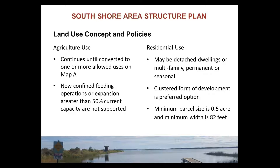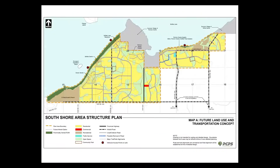Residential use could include anything from detached dwellings to small-scale multi-family, both permanent and seasonal. The preference for country residential subdivisions is a cluster form — concentrating lots on one portion of a quarter section and being generous with the open space and natural area left around the houses. The minimum parcel size for new country residential parcels is set at half an acre, similar to what is seen in the Scenic Sand subdivision.